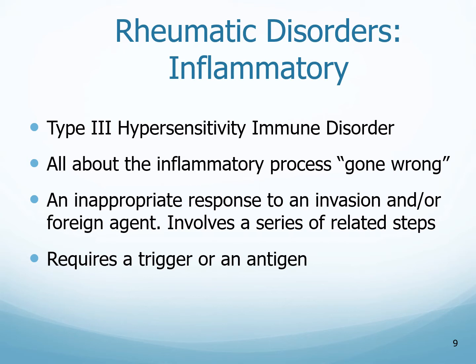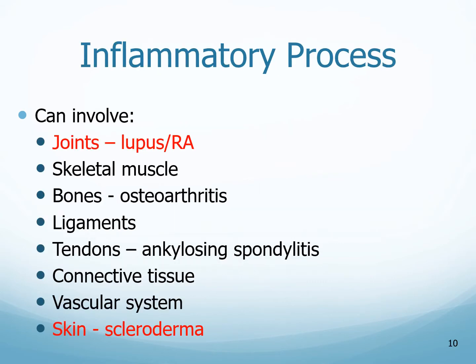As with hypersensitivity disorders, there is always a trigger or an antigen that will start the inflammatory process. This inflammatory process can involve joints, such as in lupus and RA (rheumatoid arthritis). It can involve skeletal muscle, bones — referred to as osteoarthritis — ligaments, tendons — referred to as spondylitis — the connective tissue surrounding the joint, the vascular system, and also the skin in the case of scleroderma.